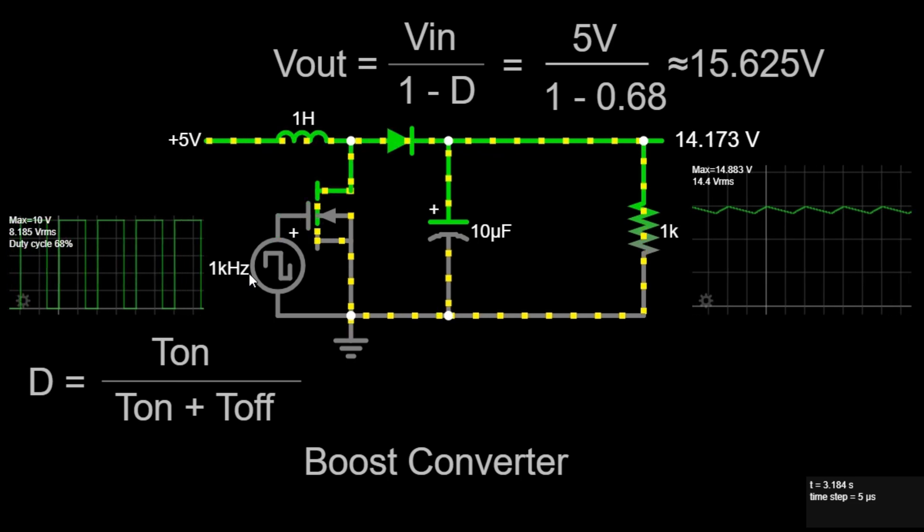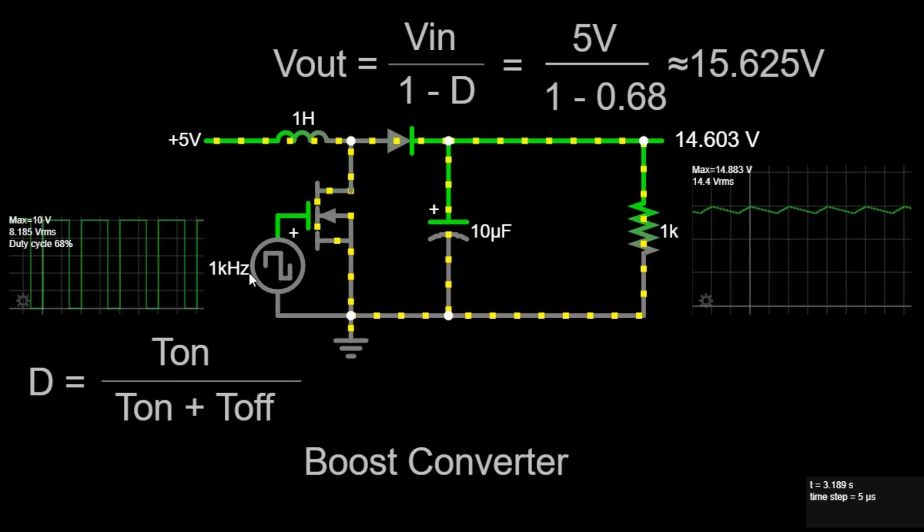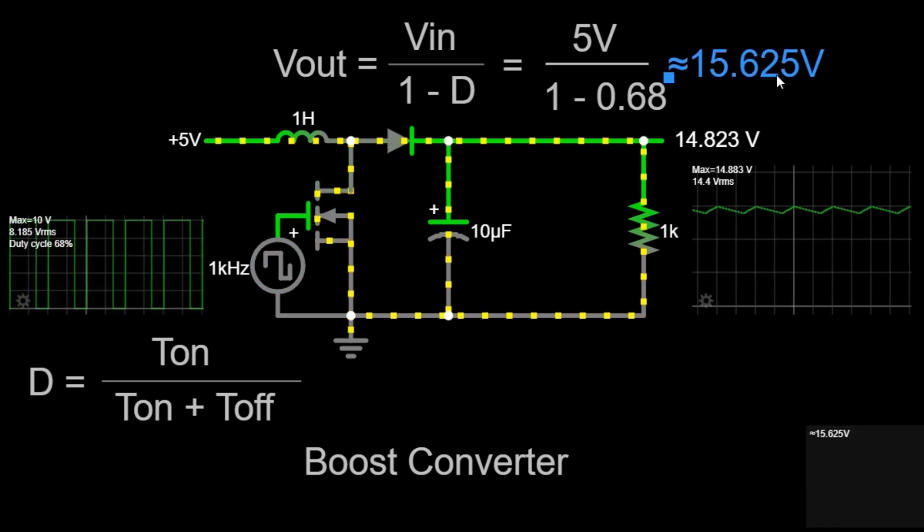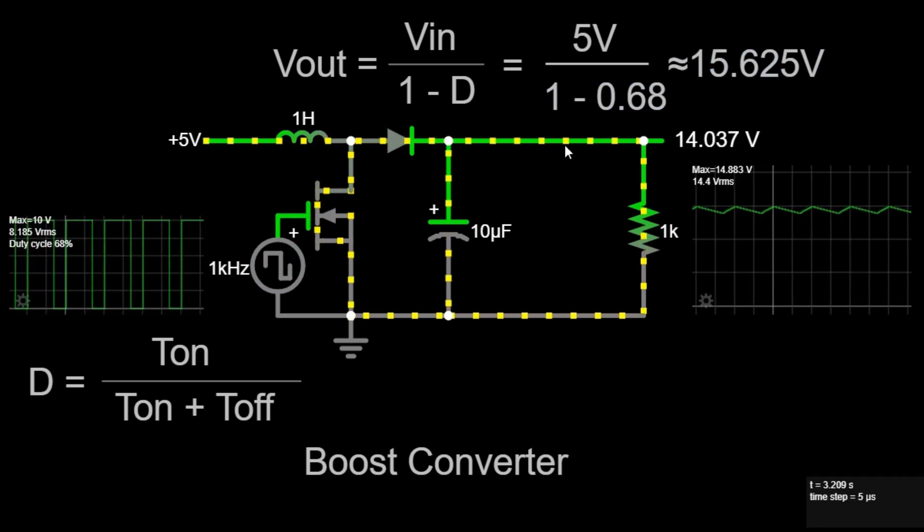Calculate the output voltage: V out equals 5 volts divided by 1 minus 0.68, which is approximately 15.625 volts.